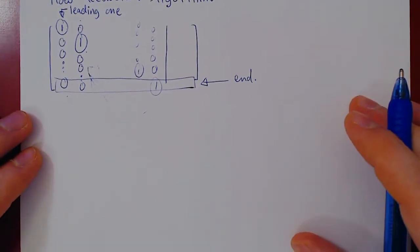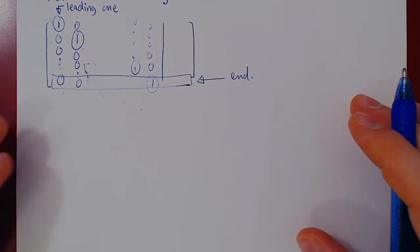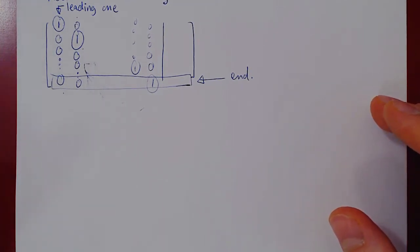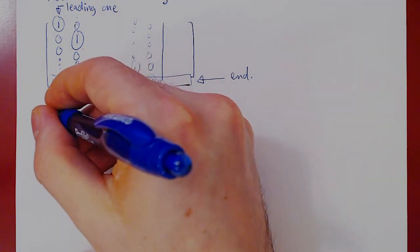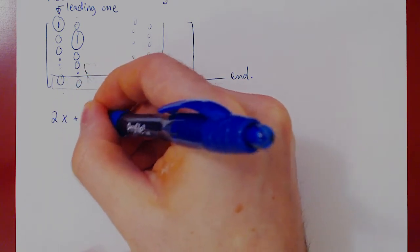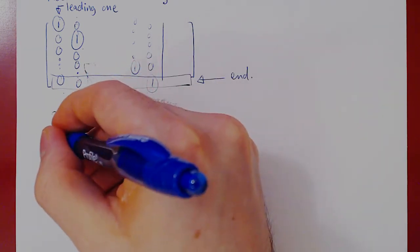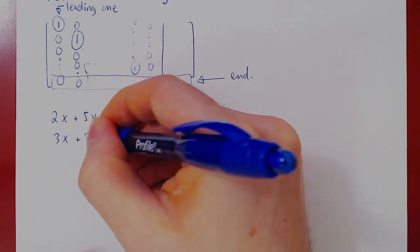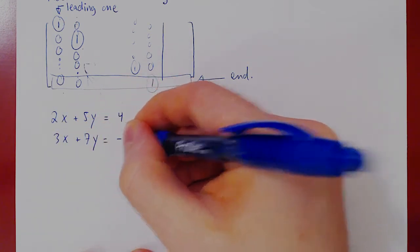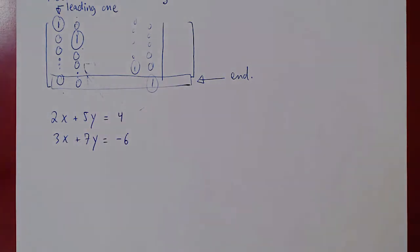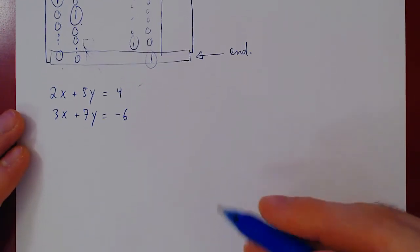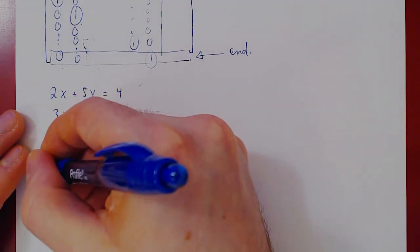Let's do a simple example with two equations and two unknowns. This will be an example of Gaussian elimination using backwards substitution. Suppose we have 2x plus 5y equals 4, and 3x plus 7y equals negative 6. We want to solve this system using our augmented matrix, elementary row operations, and the row reduction algorithm. First, we construct our augmented matrix.